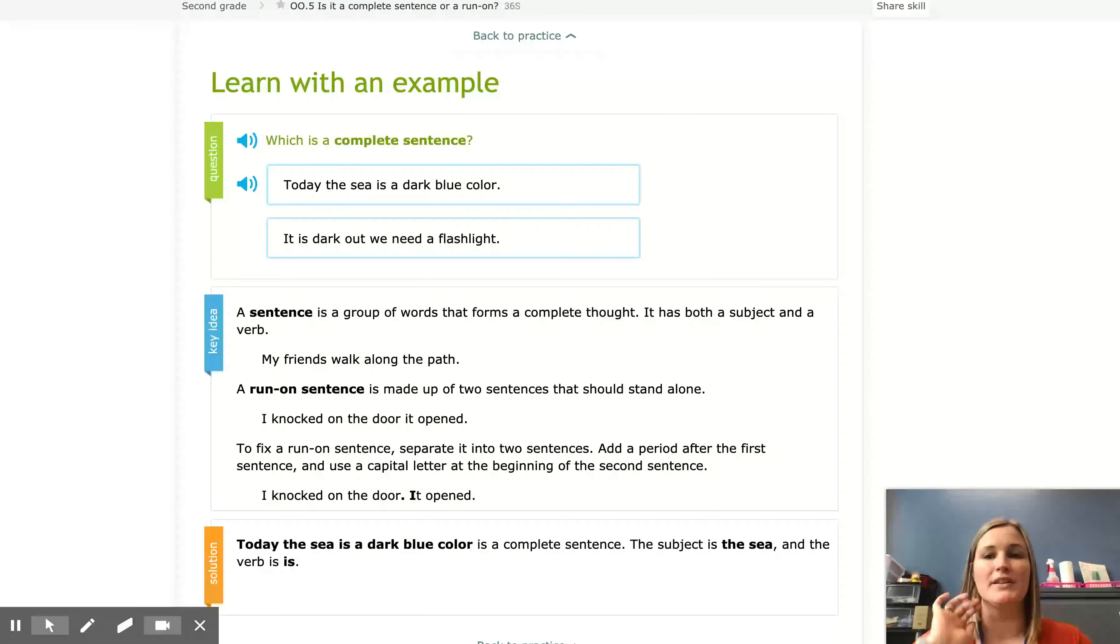Today we're going to talk about the difference between a complete sentence and a run-on. So a run-on sentence actually has too much information. It's too many parts that are jammed together to make an incomplete sentence.